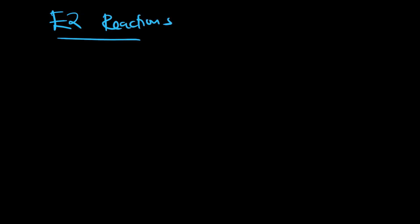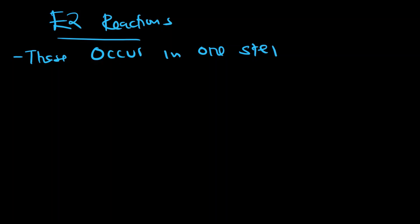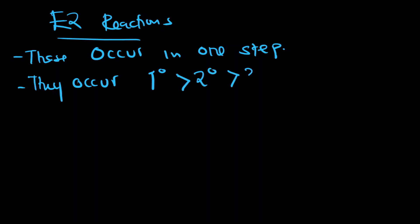E2 reactions occur in one step, so they occur very fast. They occur faster in primary alkyl halides compared to secondary alkyl halides compared to tertiary alkyl halides. Let's give an example of an E2 reaction and how it occurs.